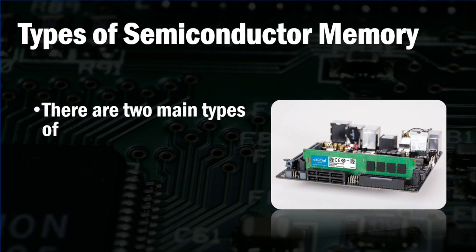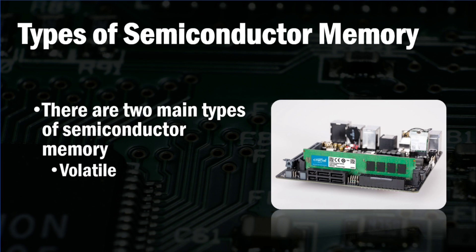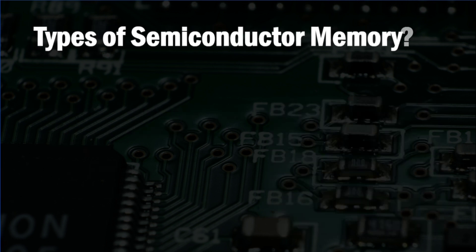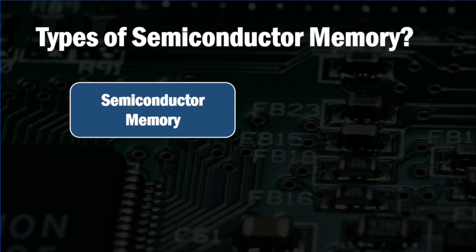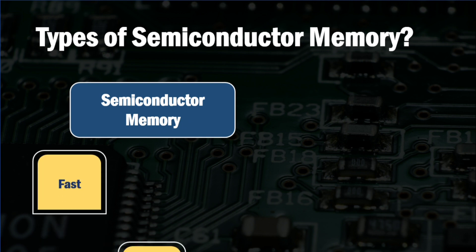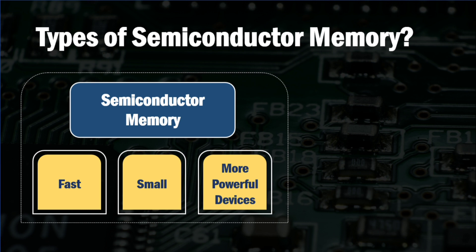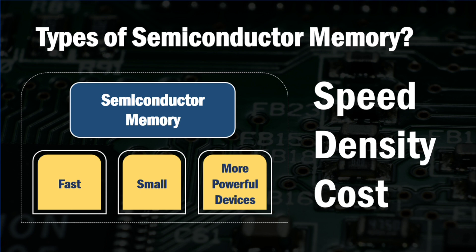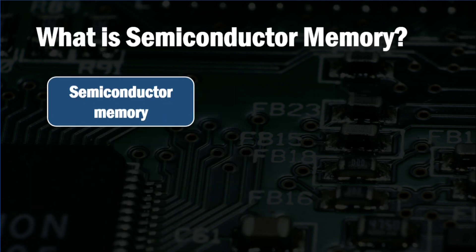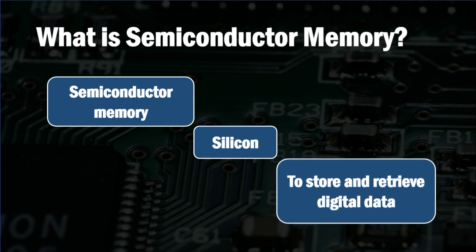There are two main types of semiconductor memory: volatile memory and non-volatile memory. Semiconductor memory is characterized by its speed, density, and cost. With the help of these semiconductor memories we can develop faster, smaller, and more powerful devices. Semiconductor memory is a type of digital memory technology that uses semiconductors such as silicon to store and retrieve digital data.